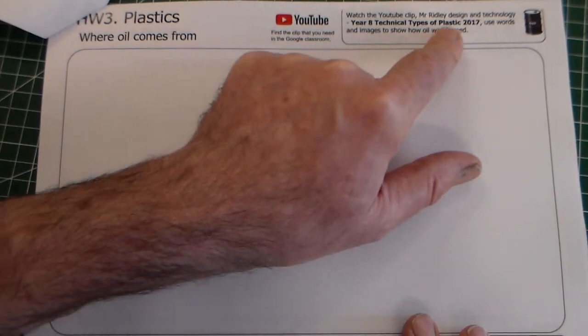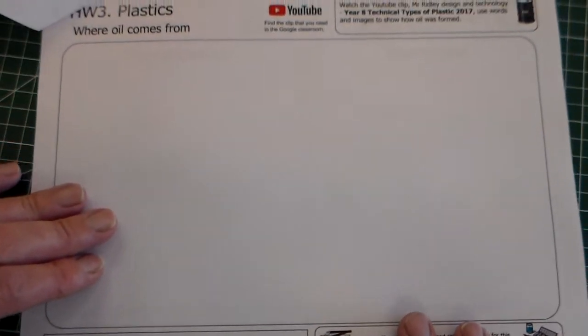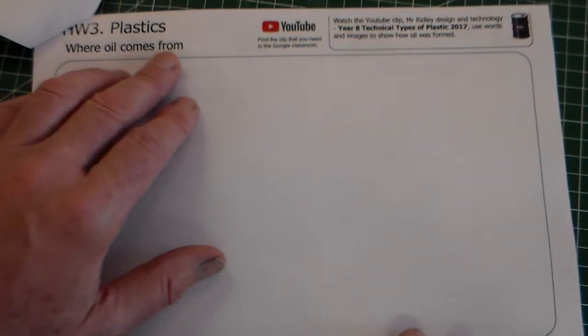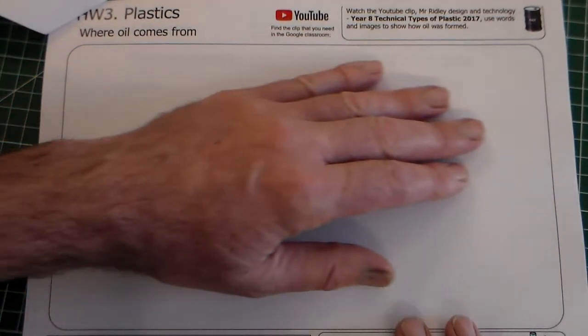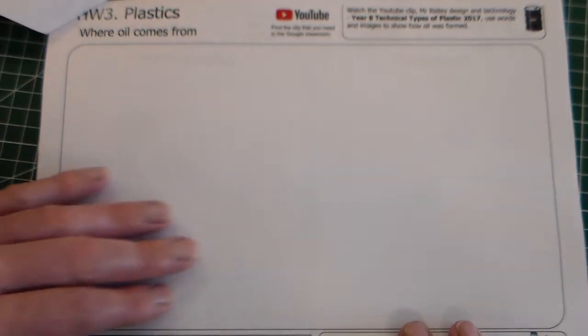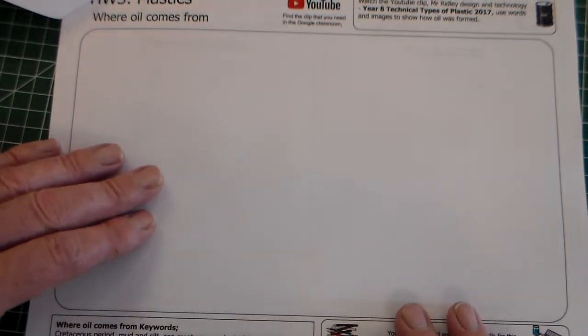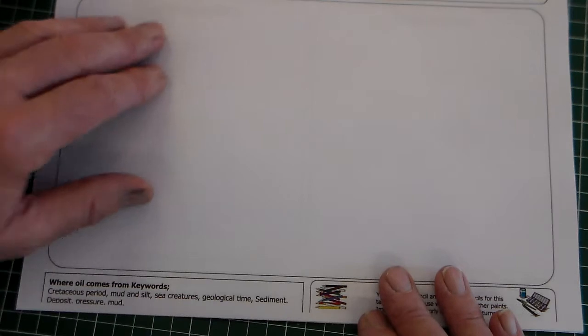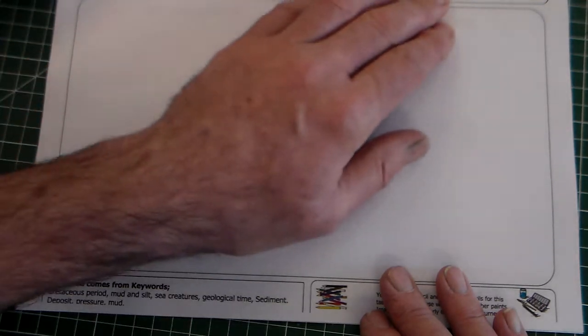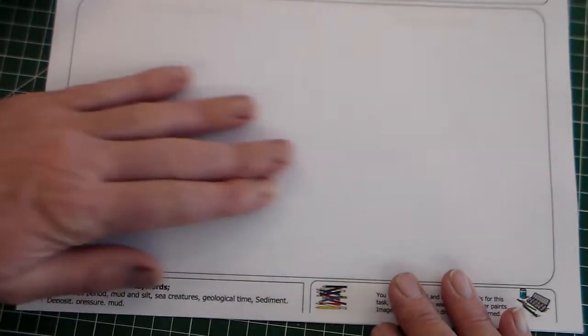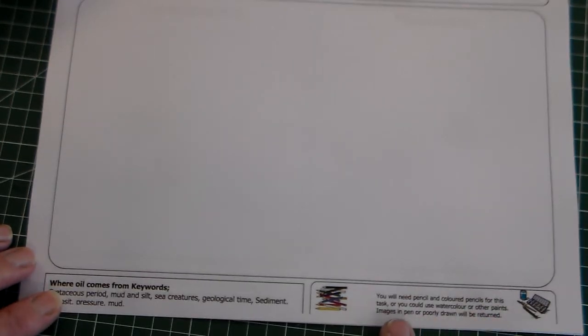You need to watch this clip and then use words and images to create a poster here about how oil is formed, where oil comes from or how oil is formed. Your poster here you could have lettering that says where oil comes from. You can have some images of the various things that are in the YouTube clip. Alternatively you could research it yourself using Google to research where oil comes from and complete that here. You will need pencils and coloured pencils for this or you could use watercolour or other paints.